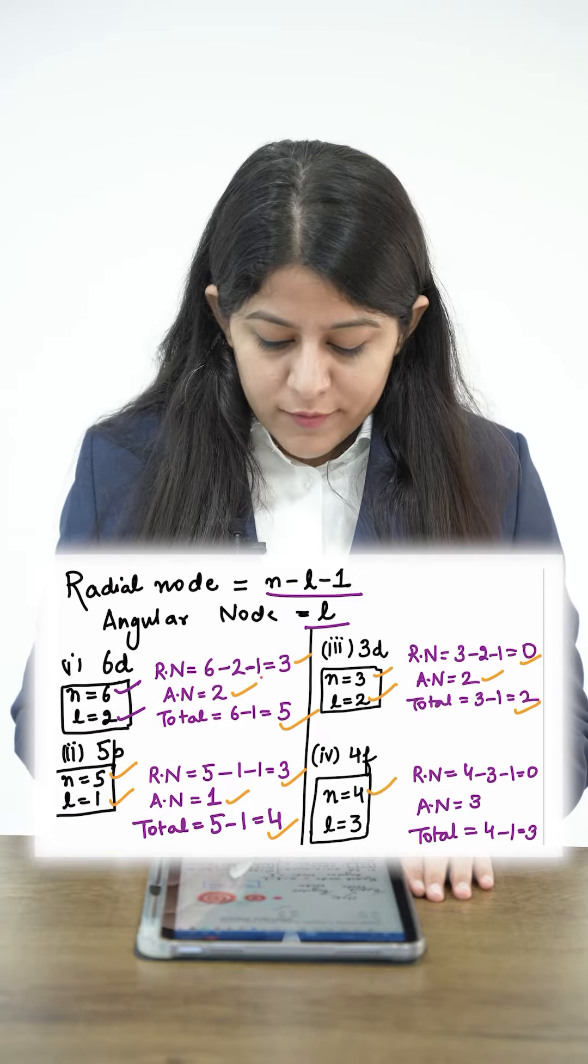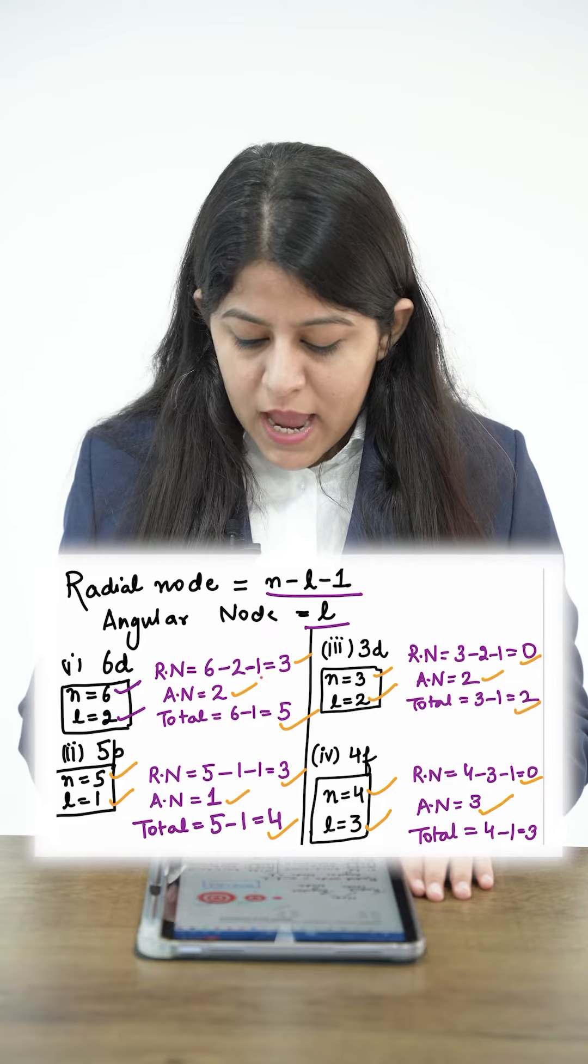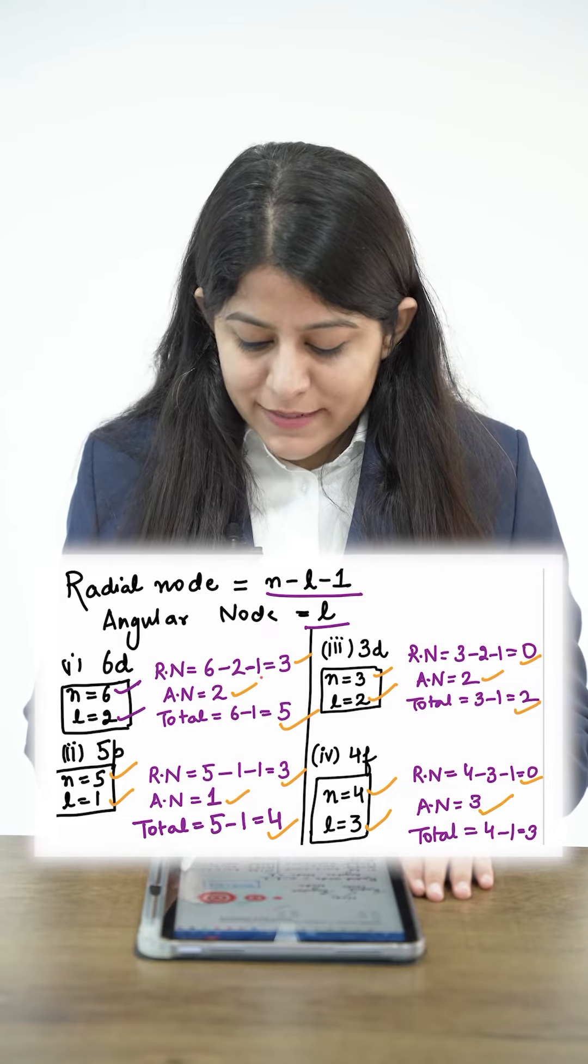4f: N is 4, L is 3. So radial nodes 0, angular nodes 3, and total nodes N minus 1, simply that is 3.